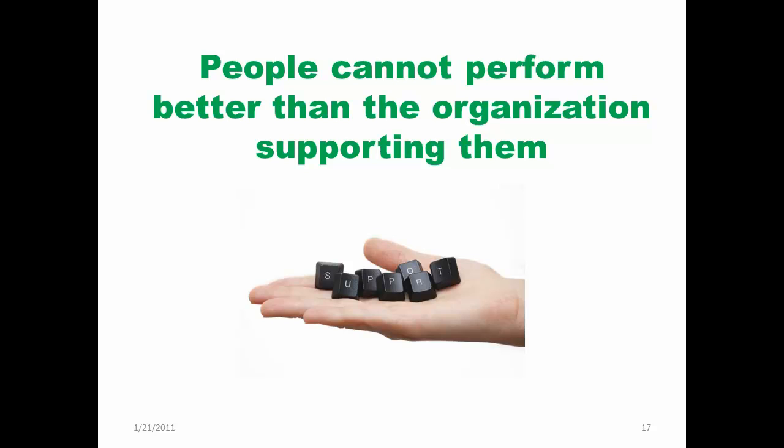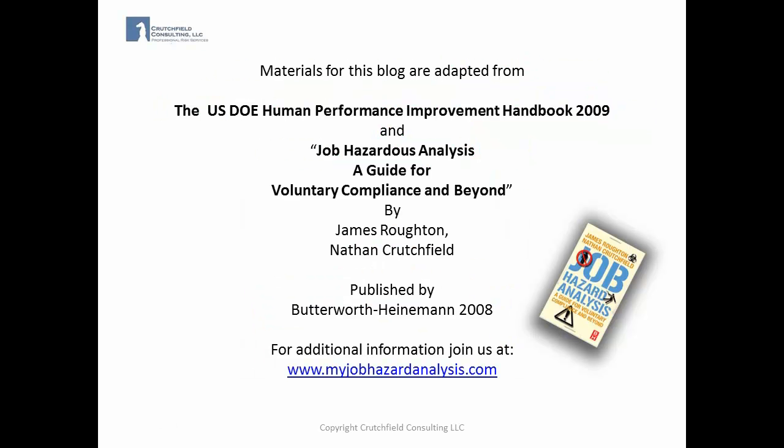Finally, a closing reminder directly out of the DOE handbook: people cannot perform better than the organization that is supporting them. The materials used for this presentation were adapted from the U.S. Department of Energy's Human Performance Improvement Handbook produced in 2009, and Job Hazard Analysis: A Guide for Voluntary Compliance and Beyond by James Roughton and Nathan Crutchfield, published by Butterworth-Heinemann in 2008. This is Nathan Crutchfield and we look forward to having additional discussions with you with regards to improving the job hazard analysis process. Thanks again.